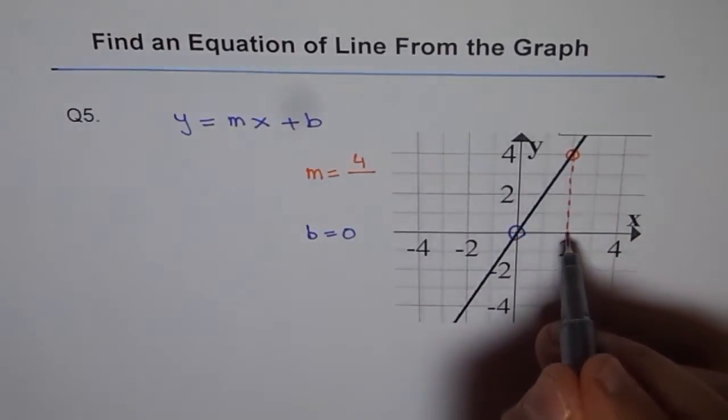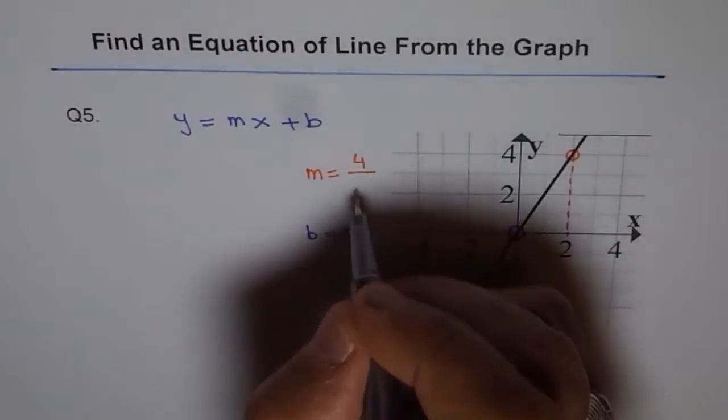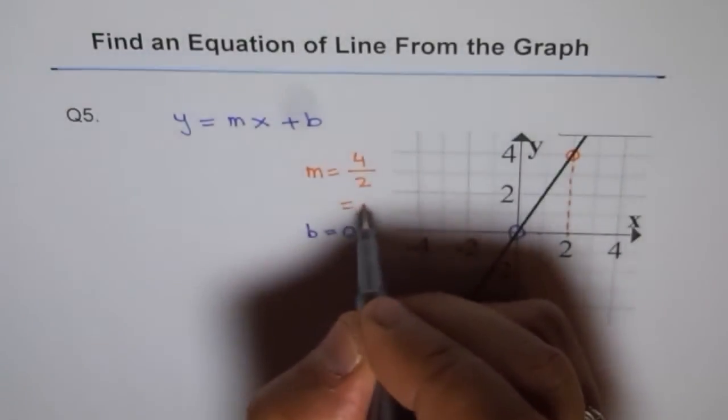Now if you move from here to there, run is of 2, 4 over 2 which gives a value 2.